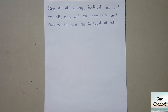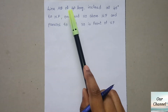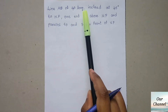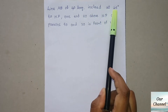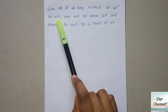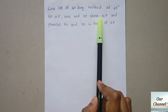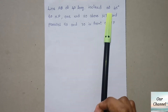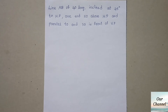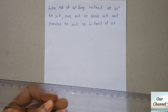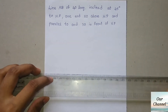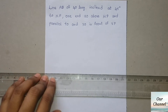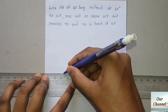Let us see the first case — a line inclined to HP and parallel to VP. The given line AB is 40 mm long, inclined at 45 degrees to the horizontal plane. One end is 20 mm above HP and 30 mm in front of VP. First, draw the reference line XY. If you saw our previous video, it will become very easy for you to understand this problem.